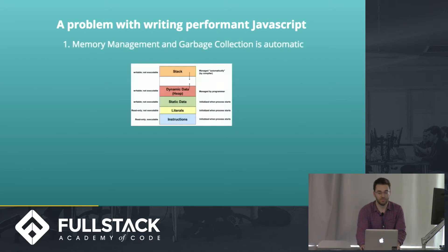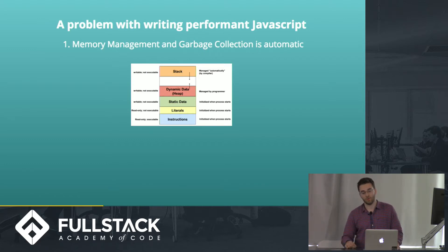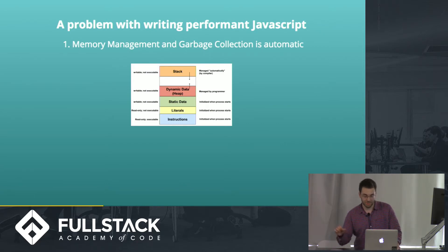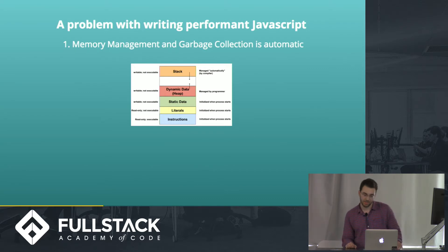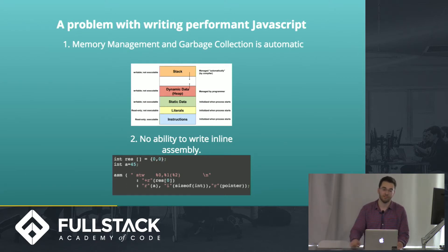A problem with writing performant JavaScript is that memory management and garbage collection is automatic. This means that you can't physically access memory or collect garbage on your own time in JavaScript. So if garbage has to be collected in your memory map, it's just going to happen automatically and your program's going to hang a little bit — not ideal for real-time applications. Another problem is that you have no ability to write inline assembly, meaning you can't go a level deeper.